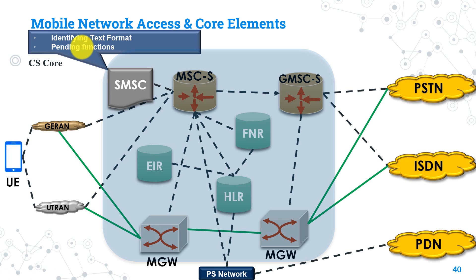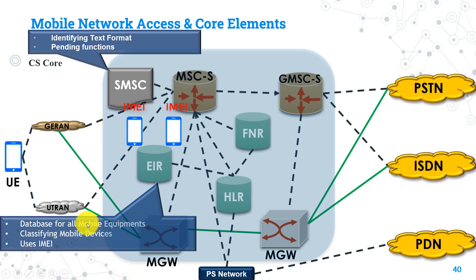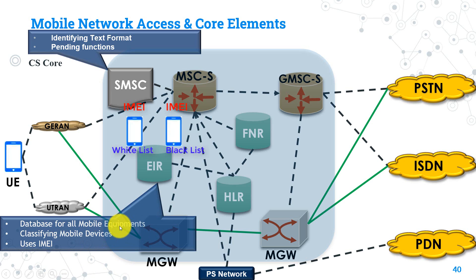The EIR, Equipment Identity Register, exists in the application layer. It is a database for mobile equipment where each device is identified by an IMEI number. It classifies handsets as white list, black list, or gray list. A white list handset is functioning normally and can access the network. A black list handset — possibly stolen — is prevented from accessing the network.